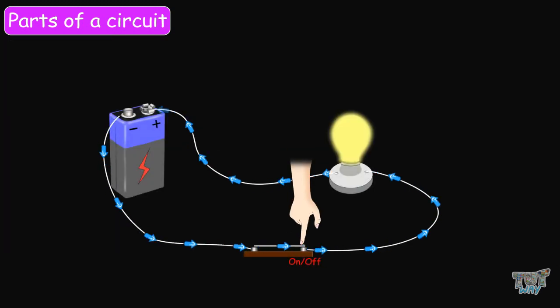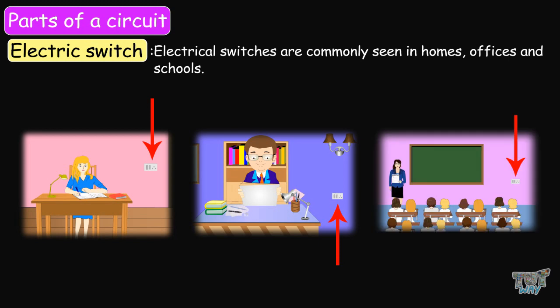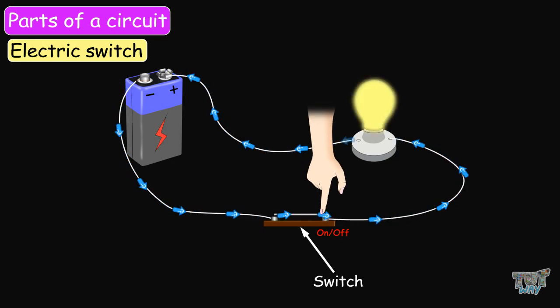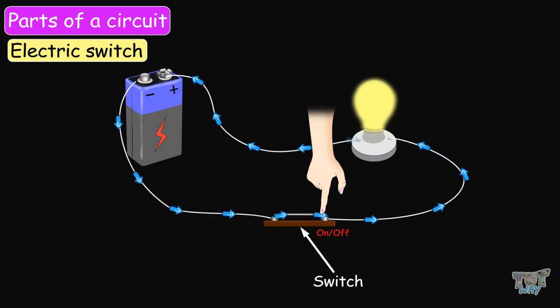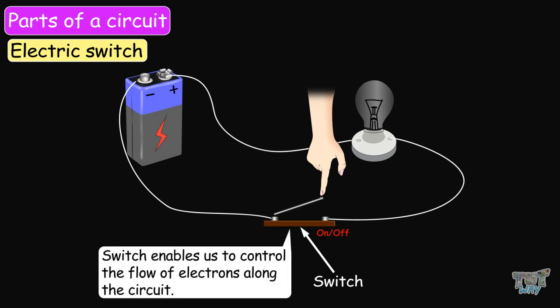So we have learned about three parts of the circuit: the battery, conductor, and the load. The fourth part can be the switch. Electrical switches are commonly seen in houses, offices, and schools — they are used to turn lights, fans, and many other electrical appliances on and off. The electric switch opens or closes the circuit. When the switch is turned on, it completes the circuit and electric current flows. When the switch is turned off, it breaks the path and current does not flow. So the switch enables us to control the flow of electrons along the circuit.